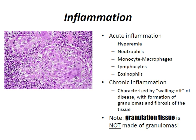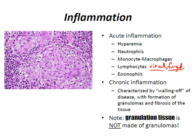Lymphocytes are the most prominent inflammatory cells in viral, fungal, and other non-bacterial infections. Eosinophils are the predominant inflammatory cells in allergic reactions and parasitic infections. Acute inflammation may progress to chronic inflammation if the insult is not cleared.